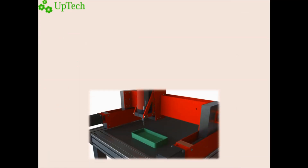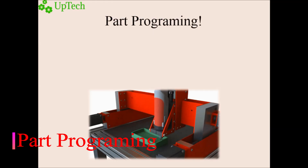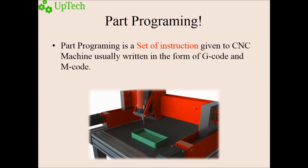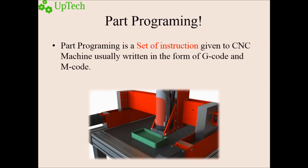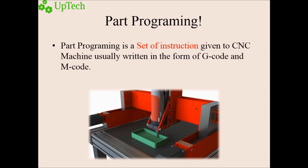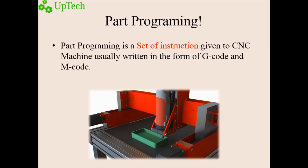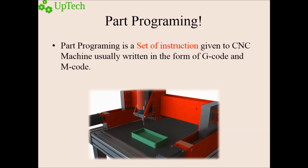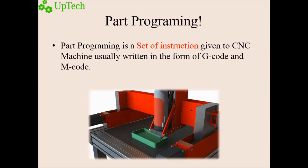Part programming is a set of instructions given to a CNC machine to control machine tools. It is a communication language for CNC, usually written in the form of G-code and M-code. G-codes are known as preparatory functions, and M-codes are known as miscellaneous functions. On this topic I have made a separate video — please do check it out, it is in the i button.